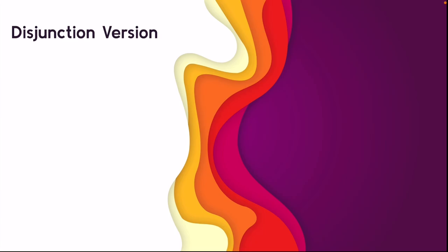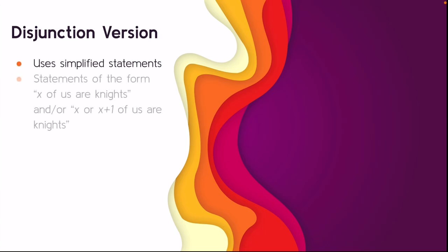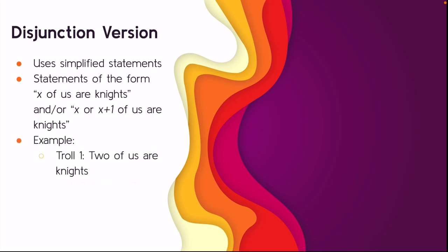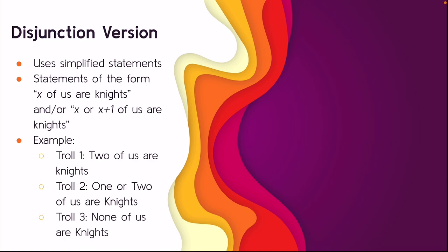Next we have the disjunction version of this puzzle. It can also use simplified statements, and the statements are of the form 'x of us are knights' or 'x or x+1 of us are knights.' For example, troll one says 'two of us are knights,' troll two says 'one or two of us are knights,' and troll three says 'none of us are knights.' In this example, the solutions are that troll one and troll two are knights, as well as the solution that just troll two is a knight.